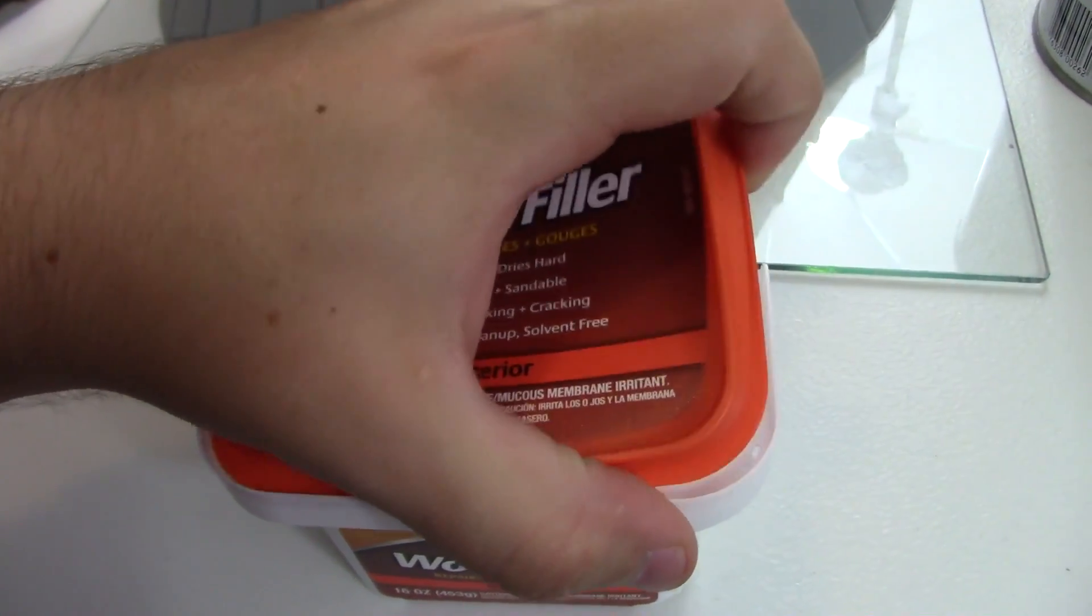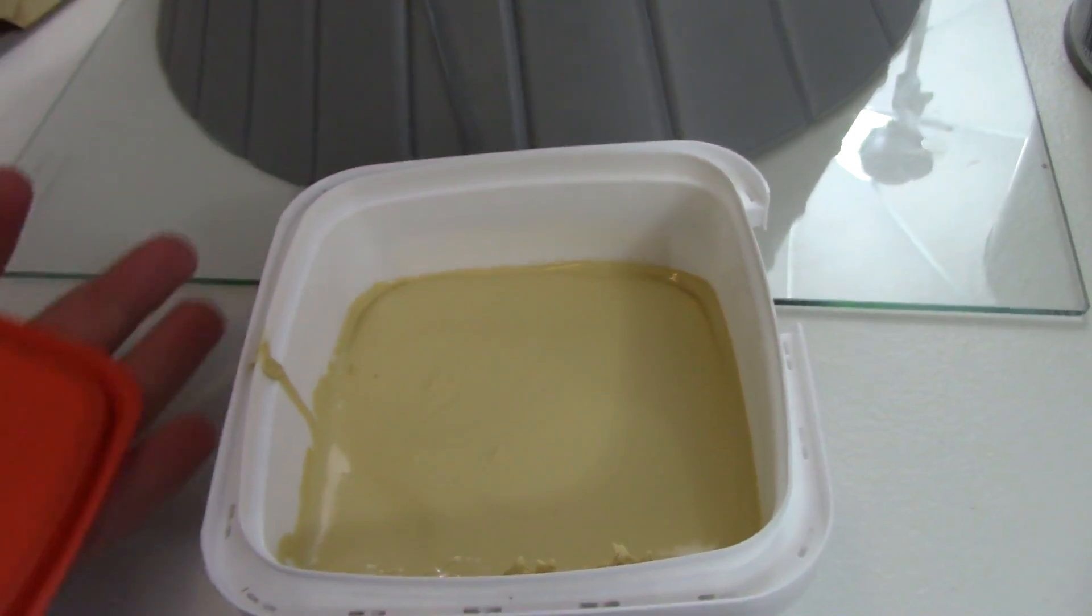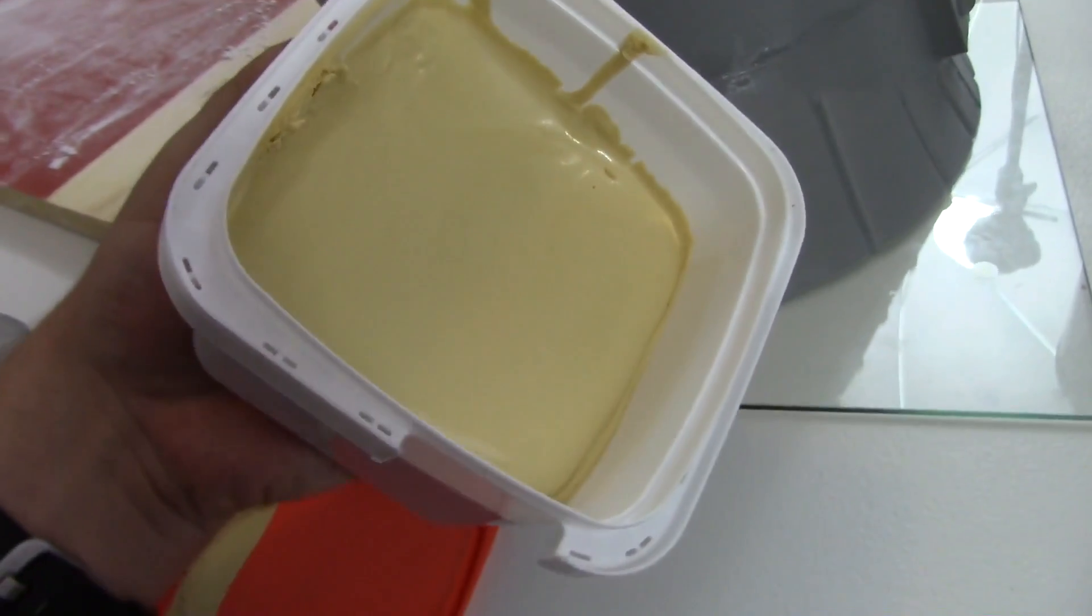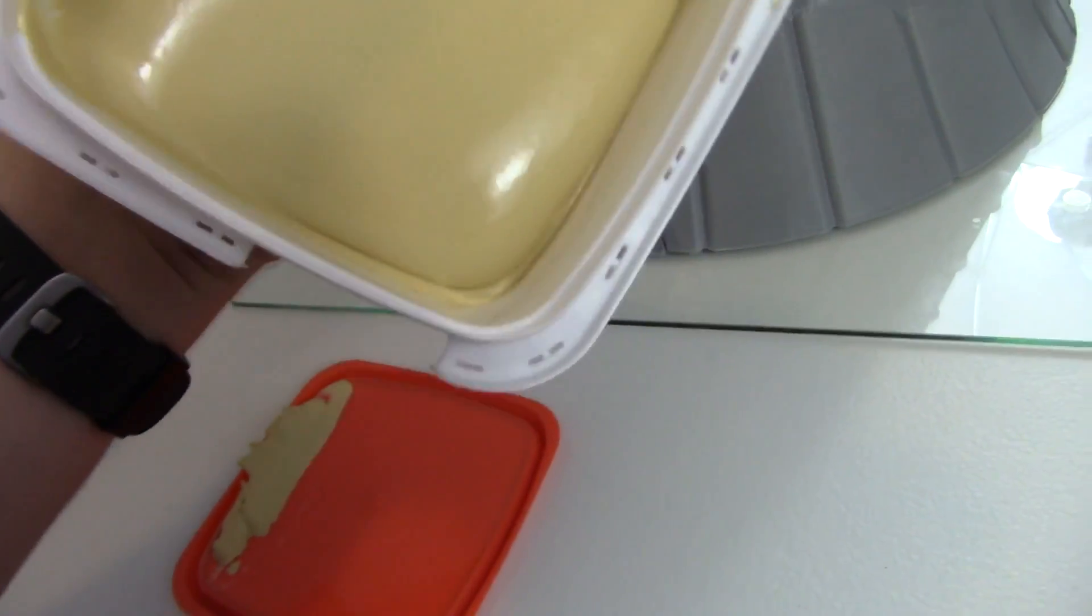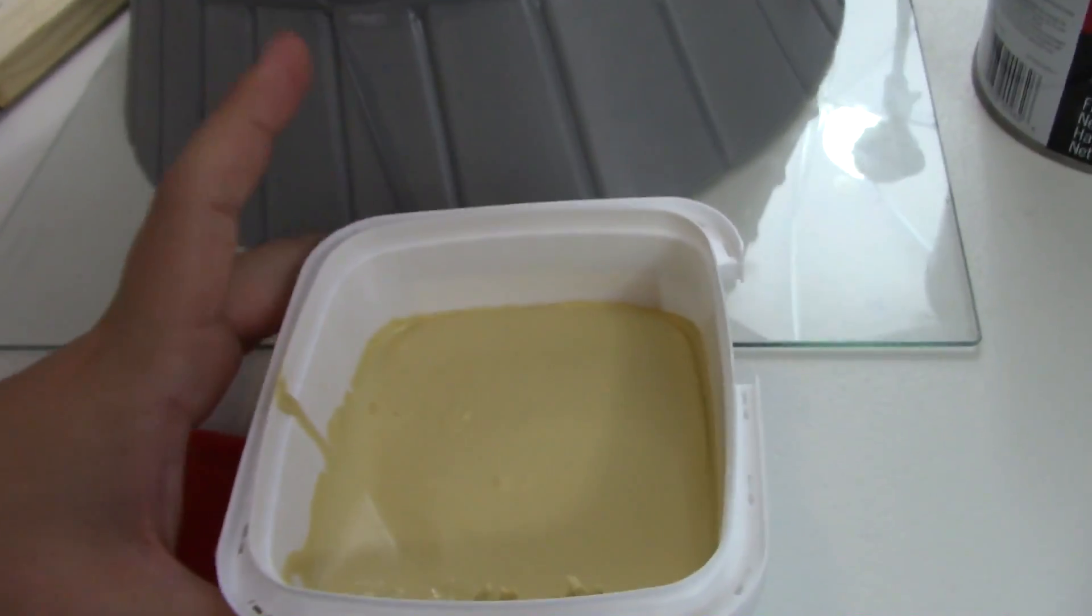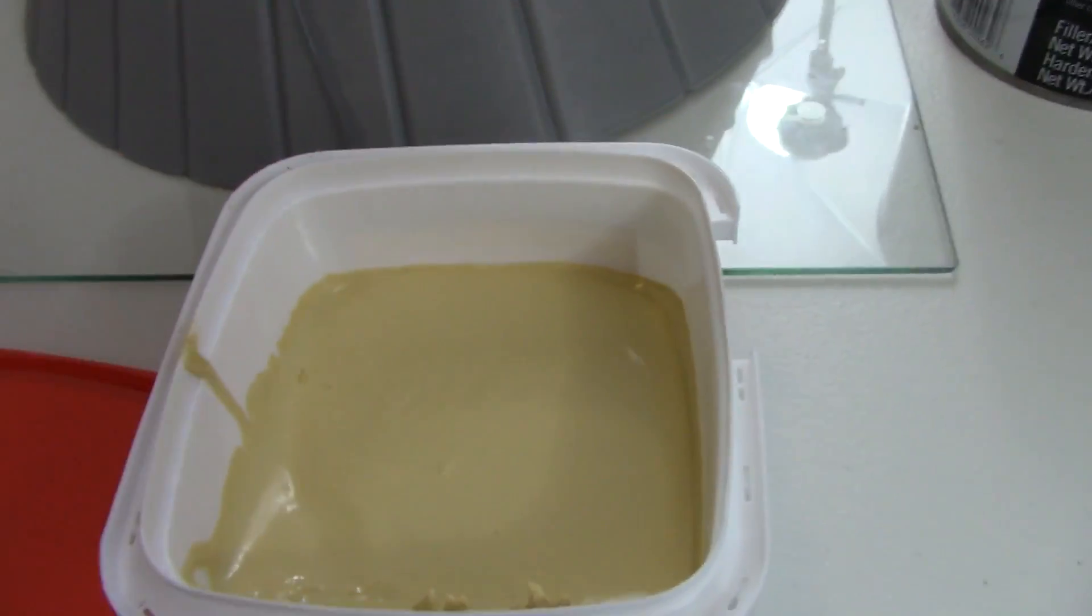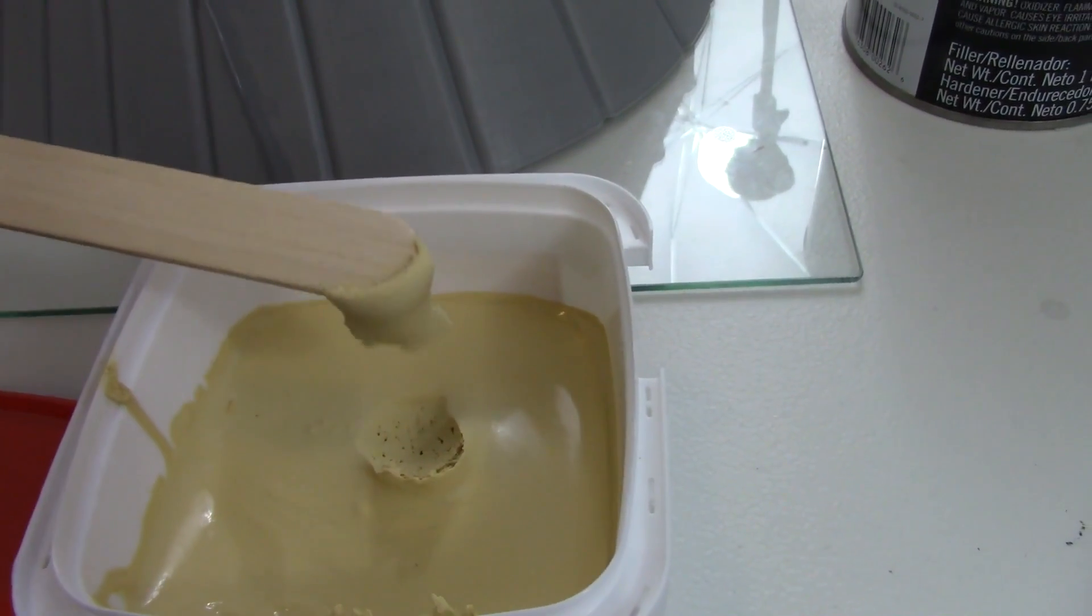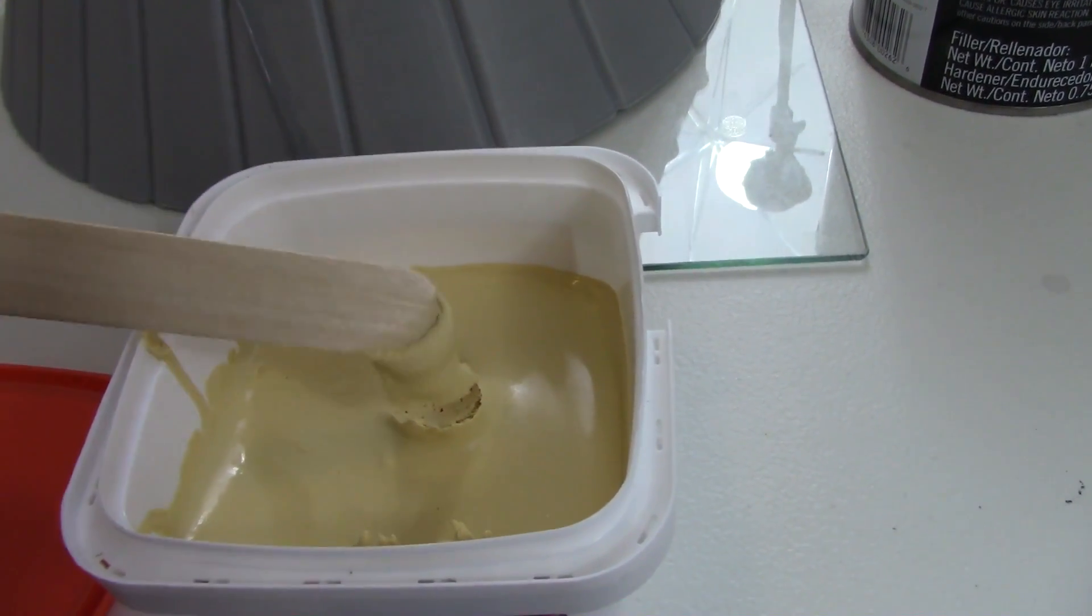Let's take a look at the wood filler itself. You can see that it's actually a pretty runny kind of filler. It is not solid, it's a little bit liquidy. And the idea is you'll just take this. I'm going to grab some popsicle sticks and we'll use that to spread this wood filler onto the 3D printed parts.